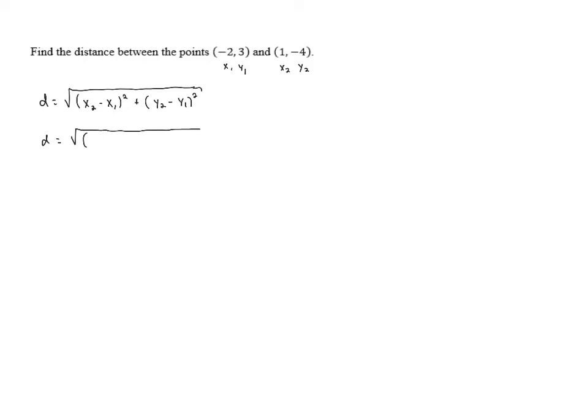So we end up with 1 minus negative 2 squared plus negative 4 minus 3 squared. Now, 1 minus negative 2 is the same as 1 plus 2, which is 3. So we've got 3 squared plus negative 7 squared.